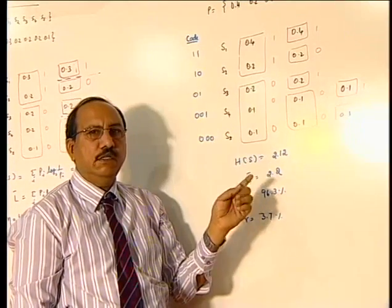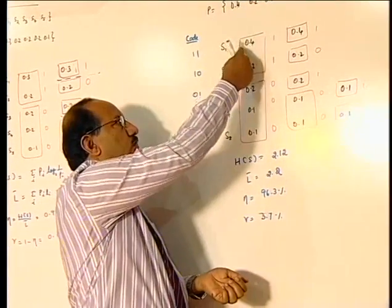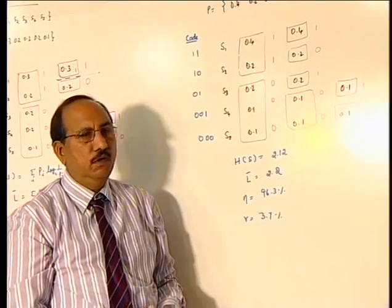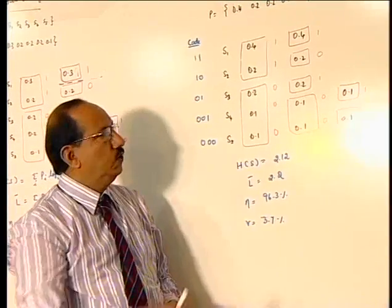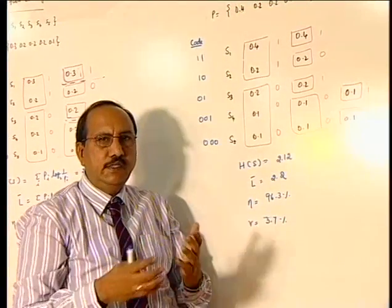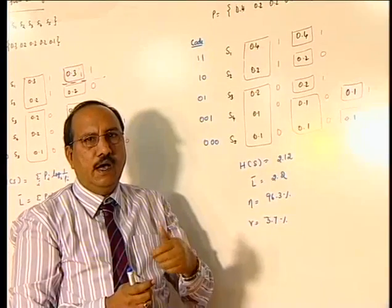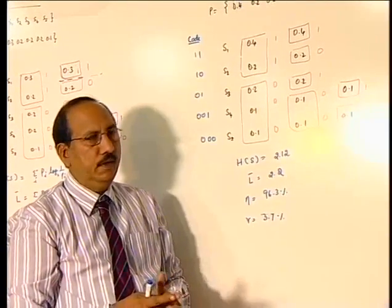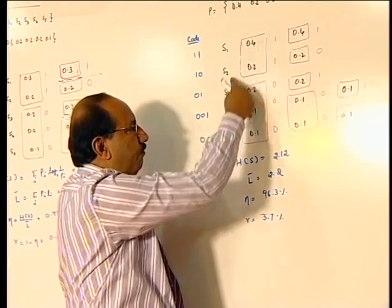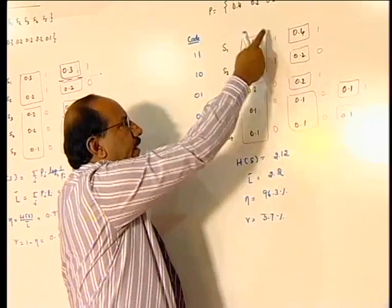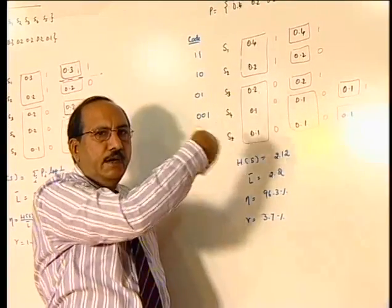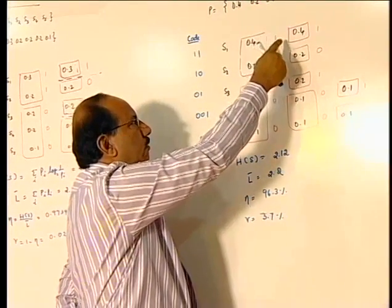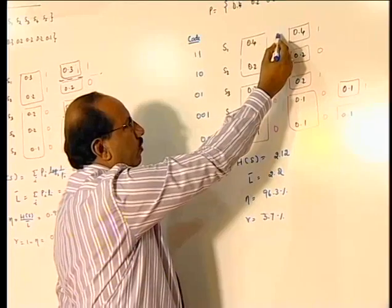This is the best option because when I do with 0.4 and all these 0.6 and when I assign a codeword, the variance will be more. So we want a code with minimum variance. So that is why I try to keep, whenever there is a difference in the probability, the highest probability should go in the upper half and the lowest probability should come in the lower half. That is what I have done. Instead of dividing 0.4 and 0.6, I divide like 0.6 and 0.4, slightly higher probability in the upper one. That will minimize the variance.